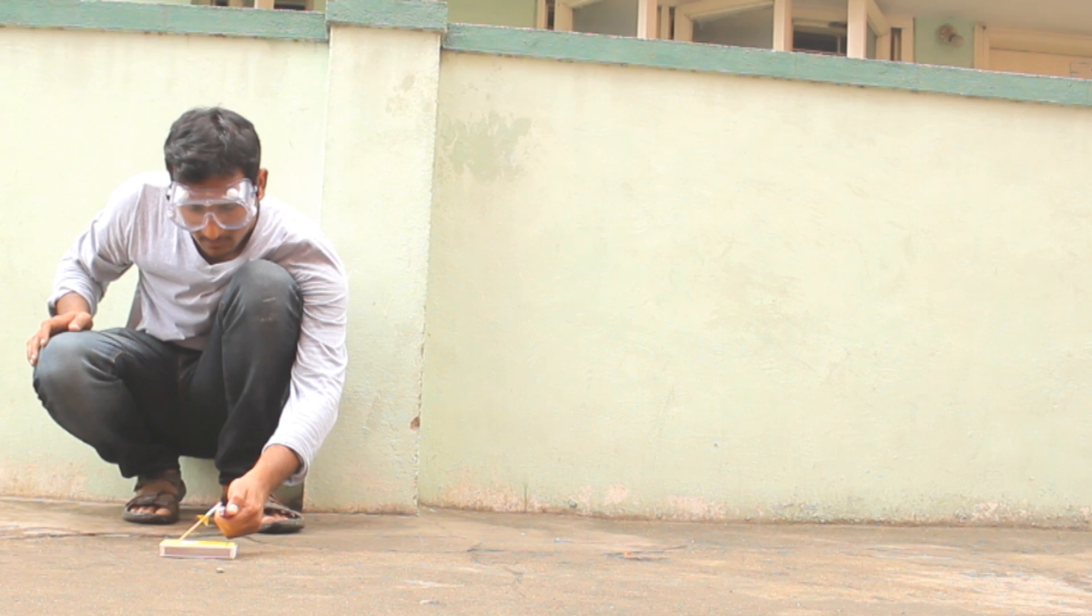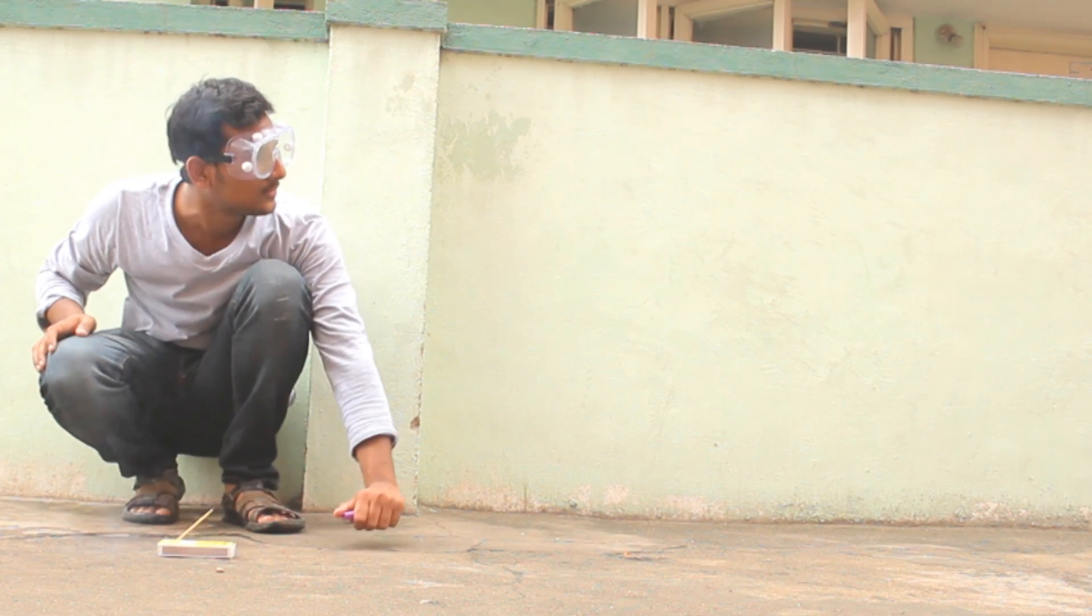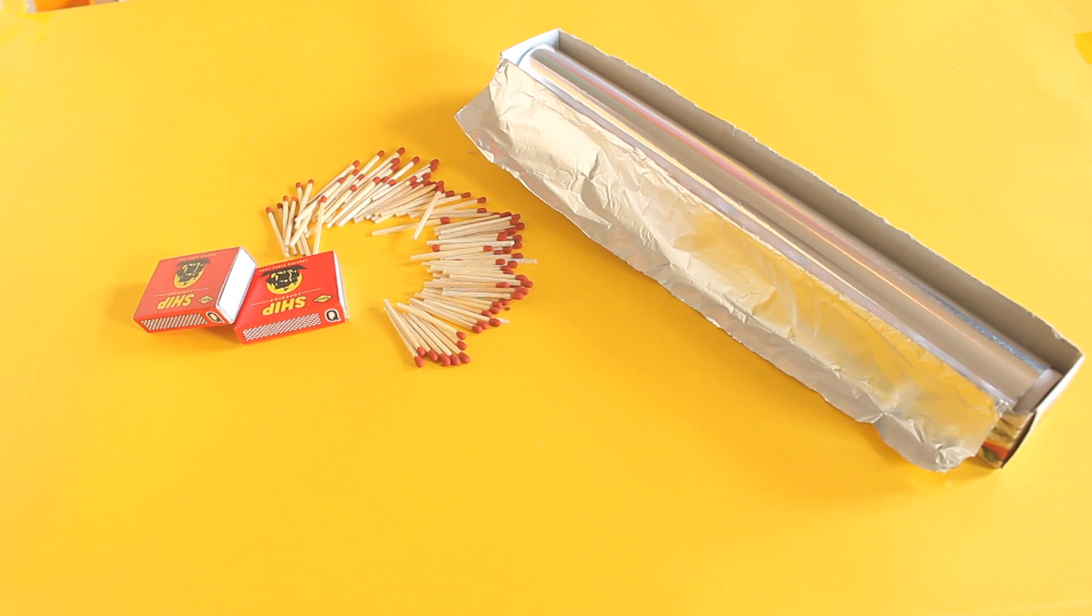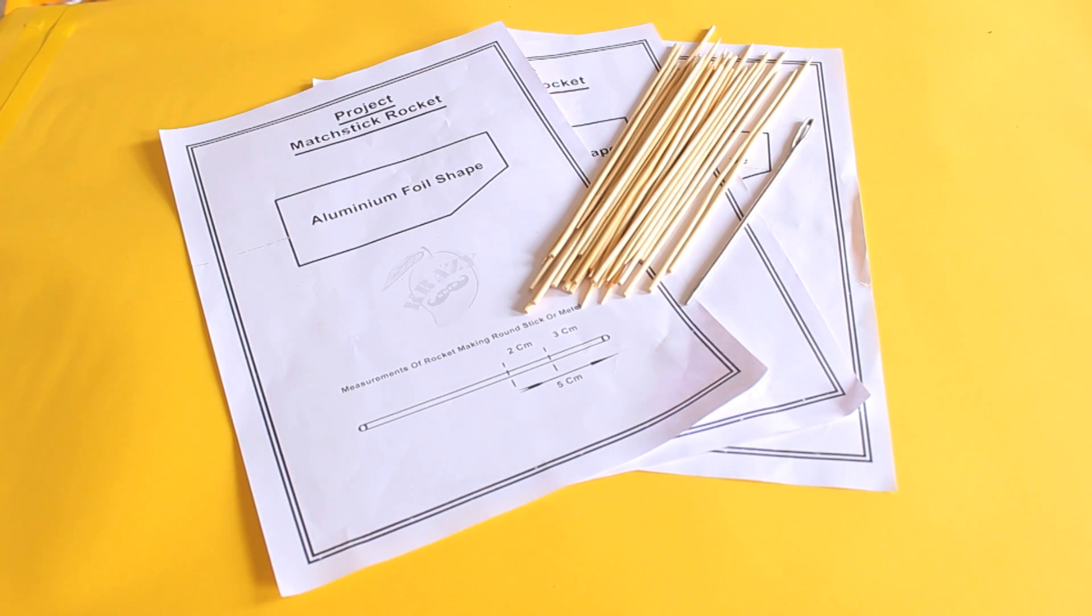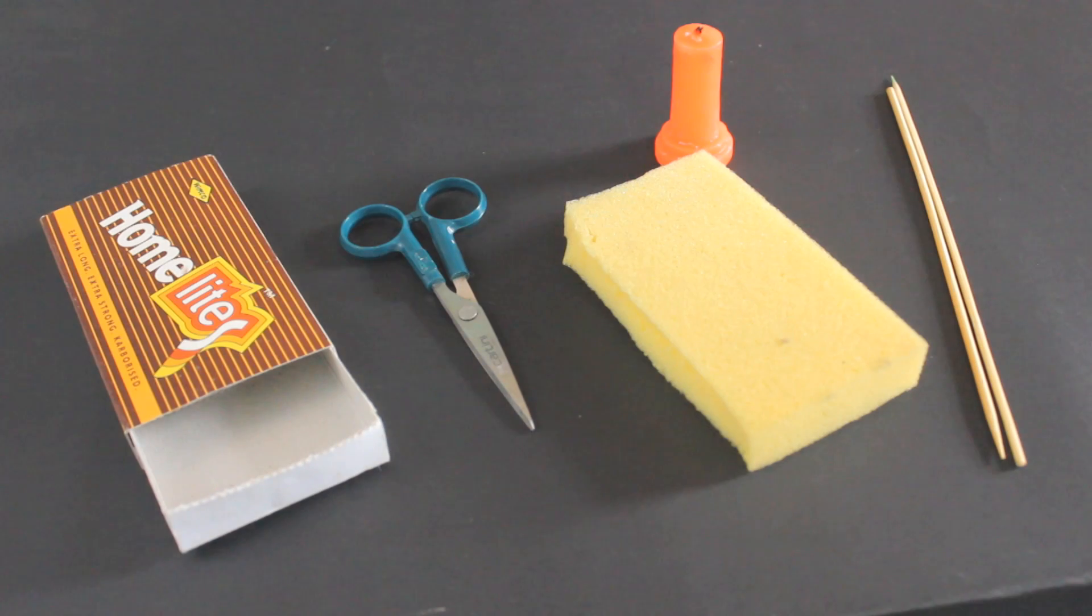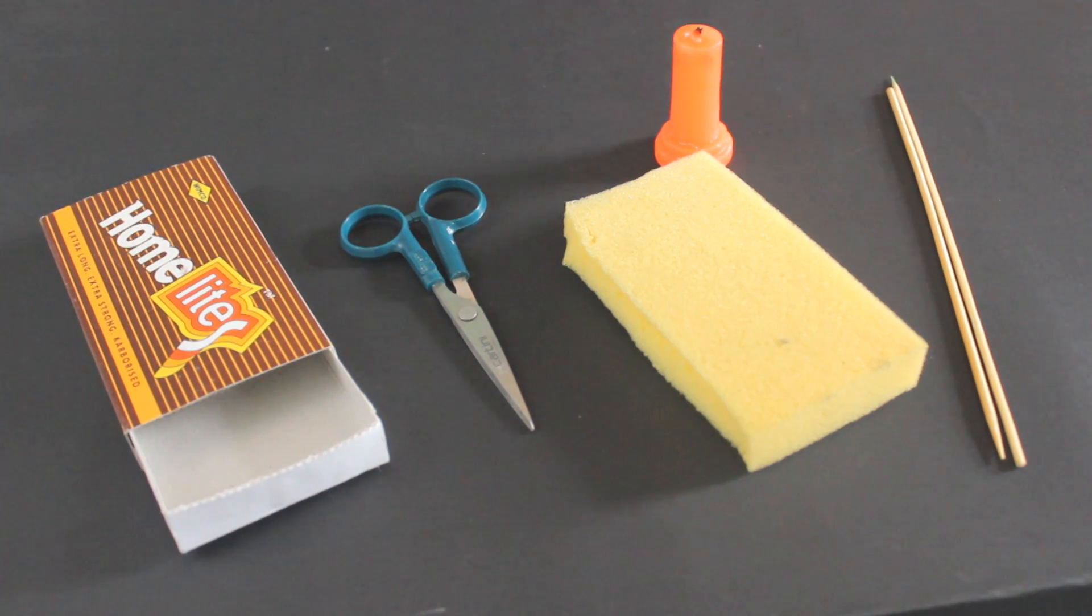These matchstick rockets are powered by a single matchstick head and shoot up to longer distances. For this project we need matchsticks, aluminum foil, a free matchstick rocket template, wooden skewers, colored tapes, a lighter or a candle, a cutter, an empty matchbox and a sponge.